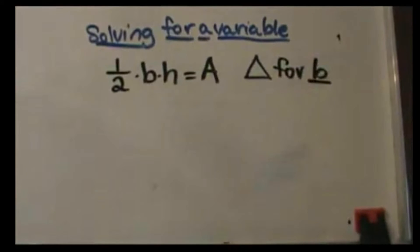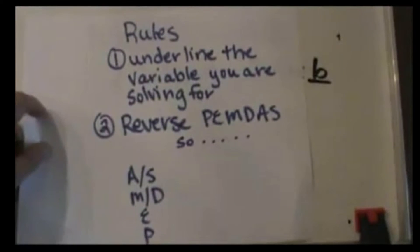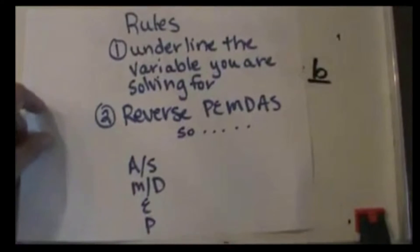Now the steps to solve for a variable are as follows. First, we're going to underline that variable that we're solving for, so in this case we're going to underline b, and then we're going to use the reverse of Please Excuse My Dear Aunt Sally.